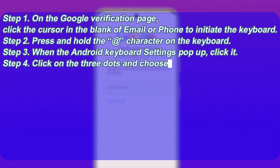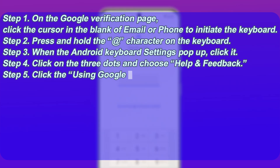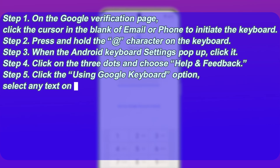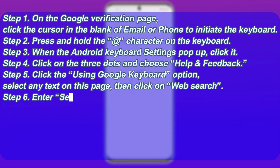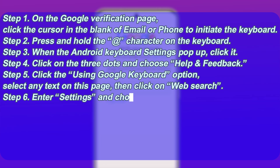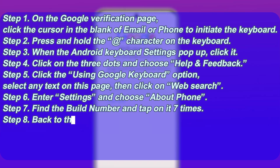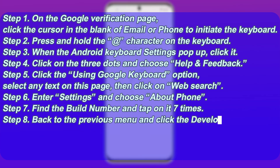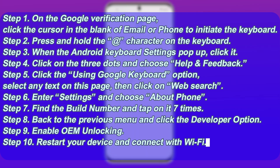Step 4: Click on the three dots and choose Help and Feedback. Step 5: Click the Using Google Keyboard option, select any text on this page, then click on Web Search. Step 6: Enter settings and choose About Phone. Step 7: Find the build number and tap on it 7 times. Step 8: Go back to the previous menu and click the Developer option. Step 9: Enable OEM Unlocking.